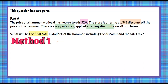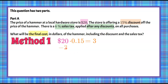I'm going to show you two different methods. Here's Method 1. We start with the original price of the hammer, which is $20. We need to find 15% of $20 to take it away off the price. 15% written as a decimal — move the decimal point two spaces to the left — is 0.15. On your calculator, 20 multiplied by 0.15 equals $3. That's the amount of the discount the store is giving us. So we subtract that $3 from the original $20, and that is $17.